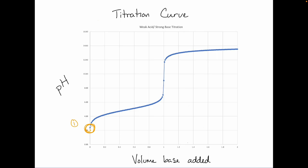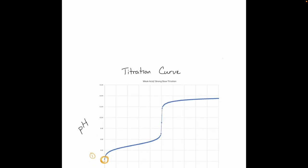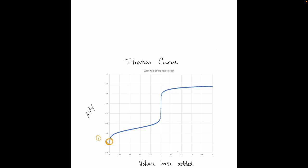This first point here is our first region, and this is before any of our titrant is added. Titrant is the thing in the burette — in this case, my base. So that first pH point is just before anything has been added at all.